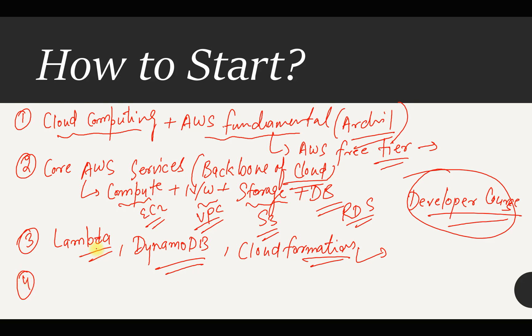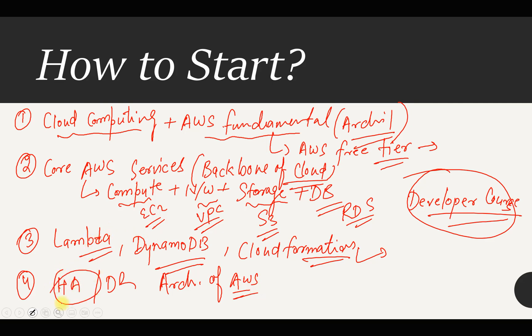The next section covers high availability and disaster recovery architecture in AWS. This will help you understand which AWS services can help you provide highly available solutions and which services are required to deploy a disaster recovery setup. This is very important for all organizations.